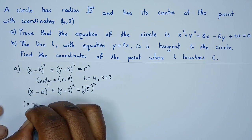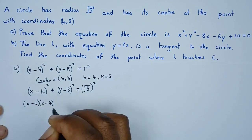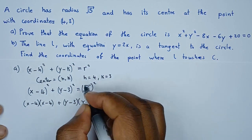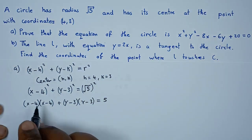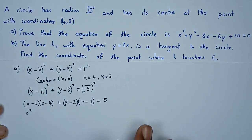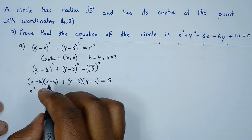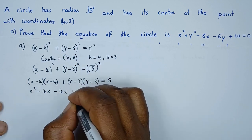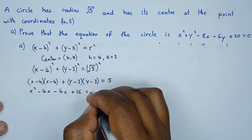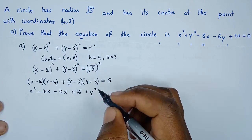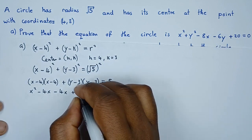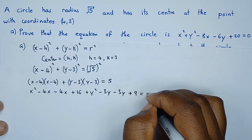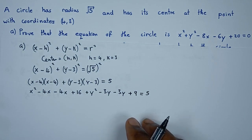We expand: x minus 4 multiplied by x minus 4, and y minus 3 multiplied by y minus 3. The square root squared cancels leaving us with 5. Expanding gives x squared minus 4x minus 4x plus 16 for the first bracket, and y squared minus 3y minus 3y plus 9 for the second, and everything equals 5.